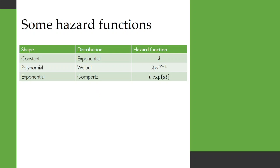Here we have some examples of hazard functions. If the hazard is constant over time, then we have an exponential distribution. So the hazard function is simply the constant lambda.